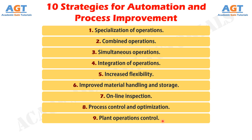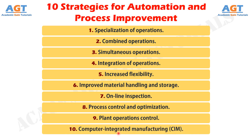Strategy No. 10: Computer Integrated Manufacturing, or CIM. Taking the previous strategy one level higher, CIM involves extensive use of computer systems, databases, and networks throughout the enterprise to integrate the factory operations and business functions.